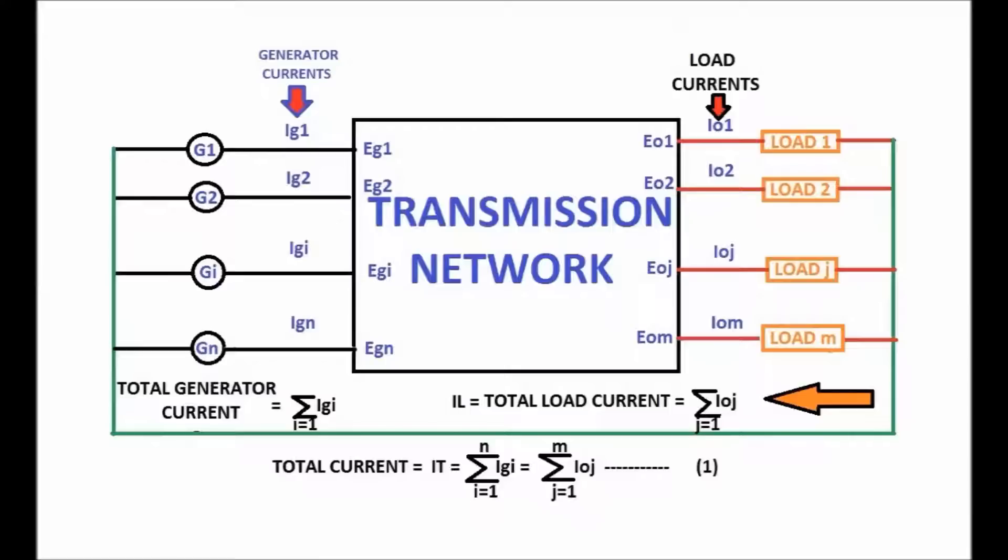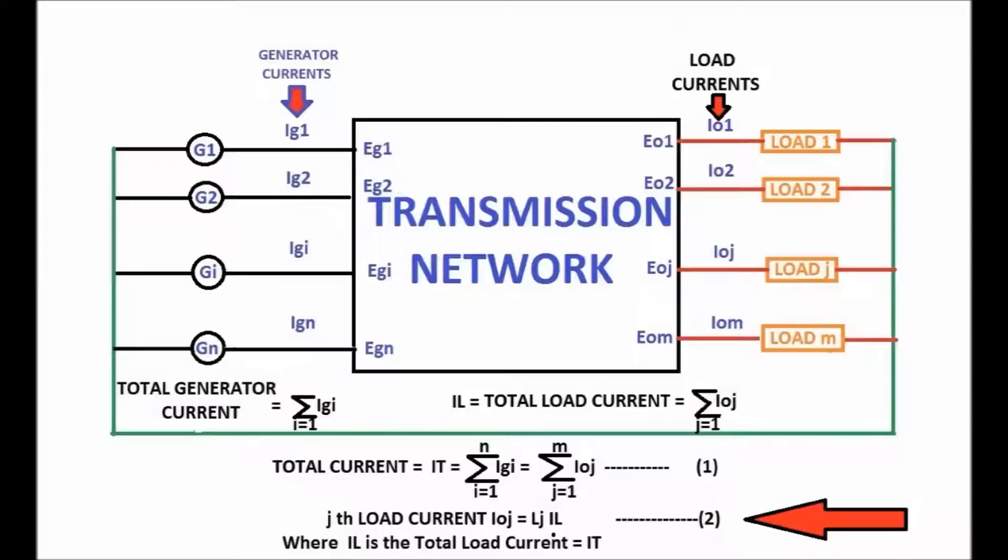The total generator current, Equation 1, equals the total network current IT. Each load current Ioj is represented in terms of complex fraction Lj of the total load current IL, as in Equation 2.